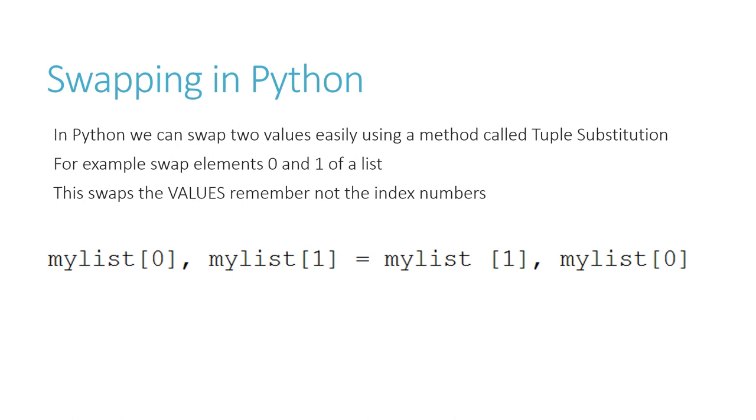But the end result is that the two values are swapped and it's a single line of code. So here the line of code swaps mylist[0] and mylist[1] and they become mylist[1], mylist[0]. It just means the values swap over of the two elements.